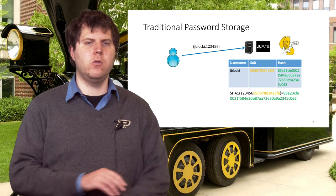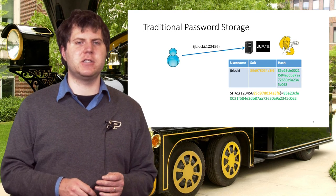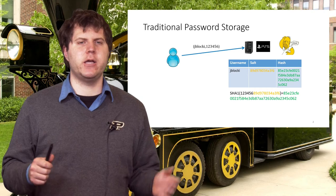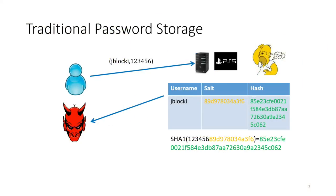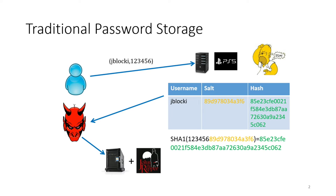What can go wrong? Due to misconfigurations at PlayStation.com, an attacker might be able to break into the server and steal this cryptographic hash file. At this point, the attacker can mount an offline attack — there's no way to rate limit the attacker. The attacker can guess as many passwords as he wants, looping through a dictionary of likely password guesses and checking all of them.